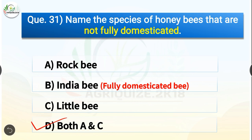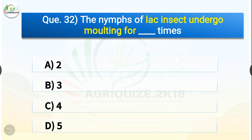Question number thirty-two: The nymphs of lac insect undergo molting for dash times. The options are 2, 3, 4, or 5. The correct answer is option B — 3. The nymphs of lac insect undergo molting for 3 times.